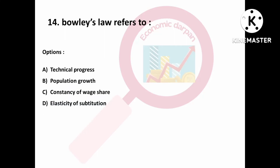Question number fourteen is: Bowley's law refers to — Option A: technical progress; Option B: population progress; Option C: constancy of wage share; Option D: elasticity of substitution. Bowley's law refers to constancy of wage share.